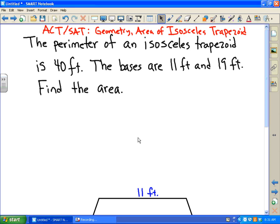Okay, here we go. This problem says ACT/SAT geometry, find the area for an isosceles trapezoid.